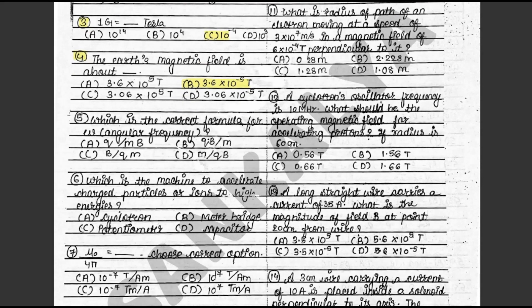Question 5: Which is the correct formula for omega or angular frequency? The answer is B: QB upon M. This is on page 138. Question 6: Which is the machine to accelerate charged particles or ions to high energies? The answer is A: Cyclotron. This is on page 140.